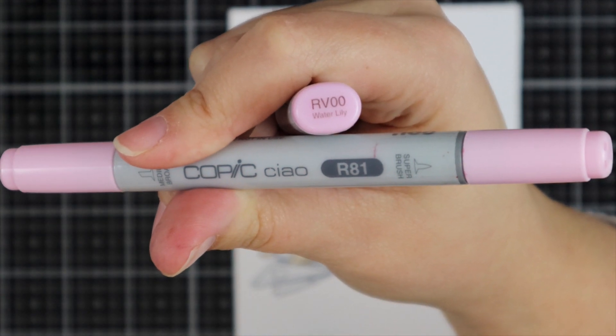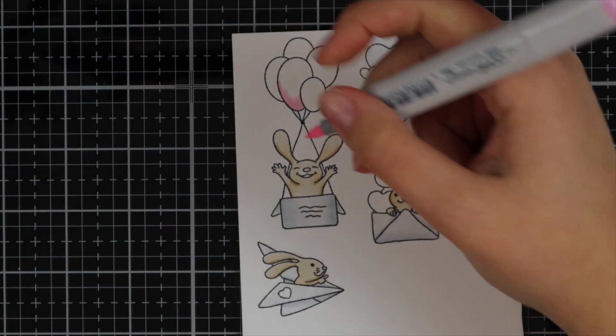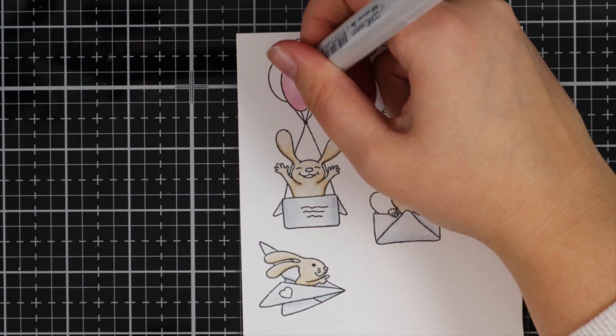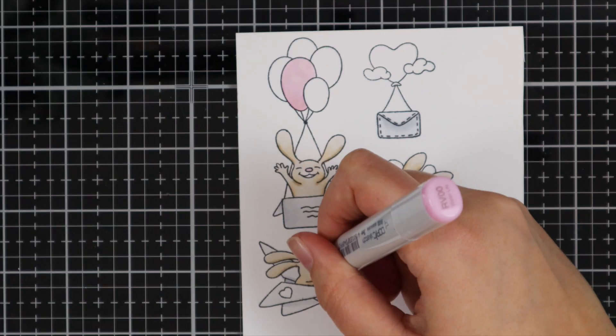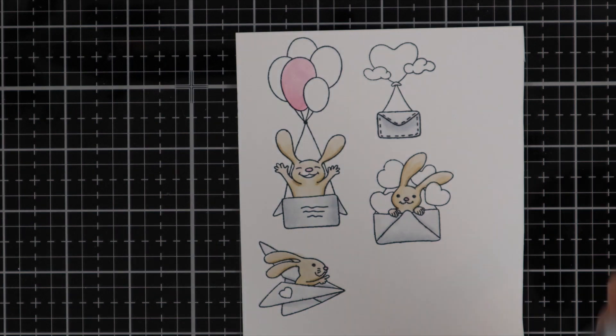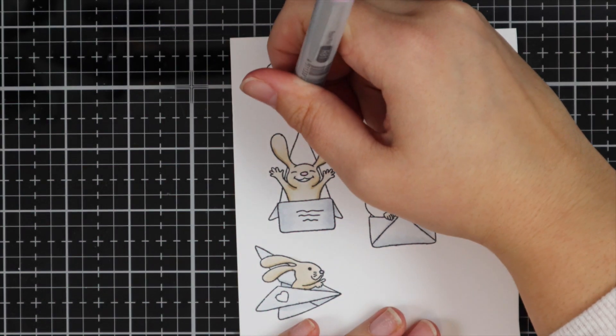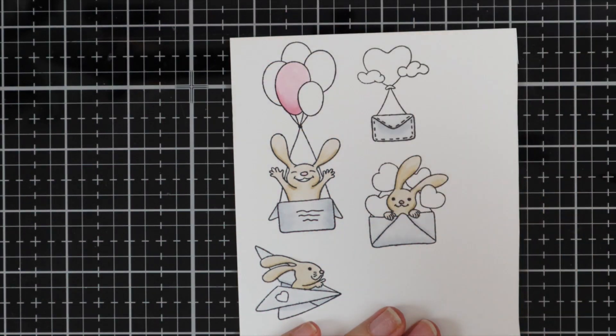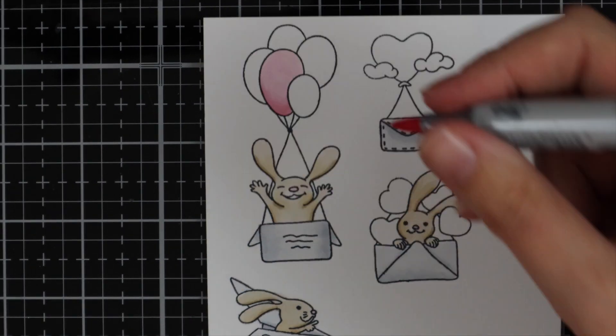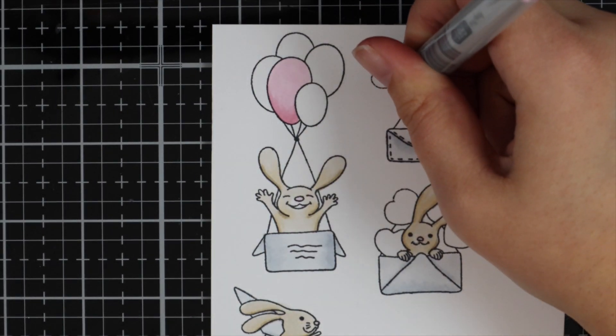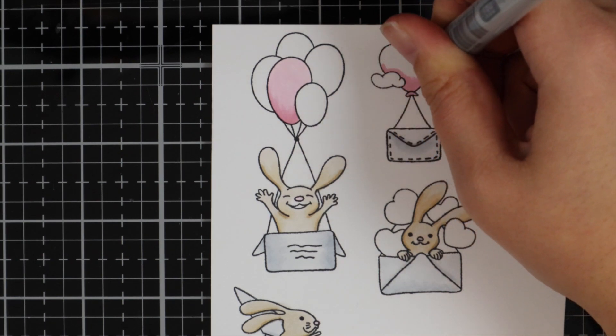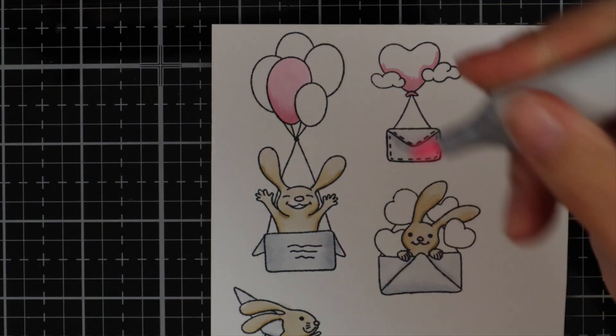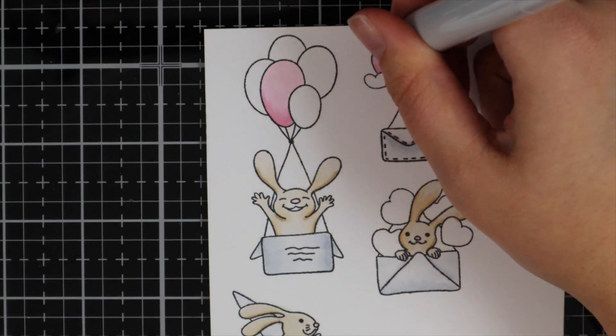And then for some of the balloons and hearts, I've used RV00 and R81. And then I've also added the RV00 to their noses. So I start with the lighter shade, which is RV00, and then I'm using the R81 just to add some shading. And then I'll go over it again with the lighter color.